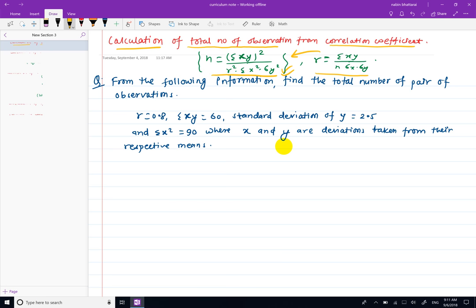Using this formula, we can calculate the total number of observations from given information and derive the formula for the required value.